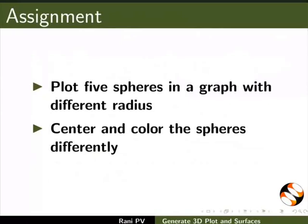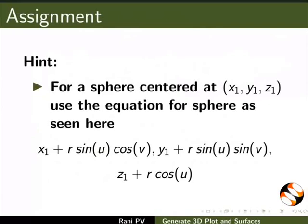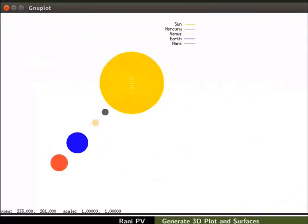For assignment, plot the following: Plot 5 spheres in a graph with different radius, center and color the spheres differently. For a sphere centered at (x1, y1, z1), use the equation for sphere as seen here. Your completed assignment looks similar to this.